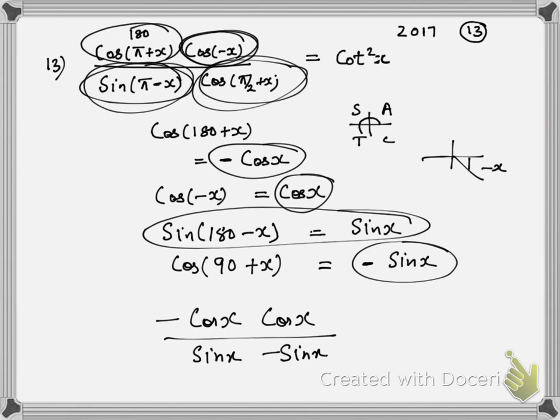As you can see, cos by sin is cot x, so that is how it becomes cot square x. Minus and minus cancel.